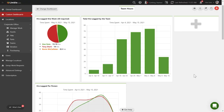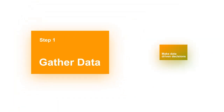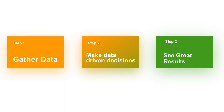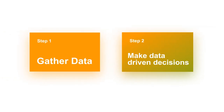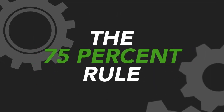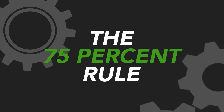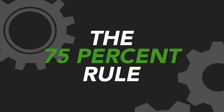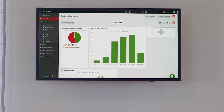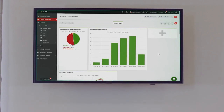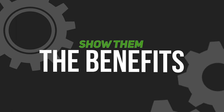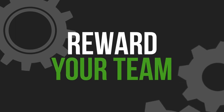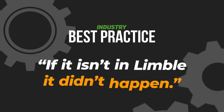Let's do a quick recap of what we discussed. If you and your team get good data into Limble, then you will be able to make data-driven decisions. These data-driven decisions will lead to great results, like better resources for your team. In order to get good data, your entire team needs to be logging their work every day. Strategies include: training your team on the 75% rule, creating and sharing a Team Hours dashboard, teaching your team how they benefit from tracking hours, using positive peer pressure and rewards, and adopting a culture of 'if it isn't in Limble, it didn't happen.'